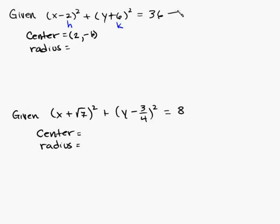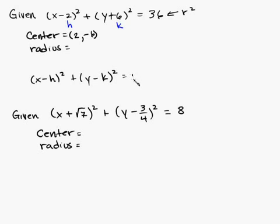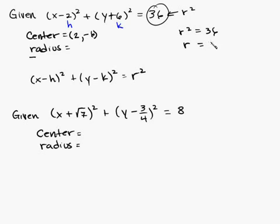And your radius: this right here represents r squared, because the circle equation is x minus h quantity squared plus y minus k quantity squared is equal to r squared. So this represents r squared, and we want just r. So we set r squared equal to 36, take the square root of both sides, and you get r equals 6. Not plus or minus 6 — just 6. Radius is always positive.